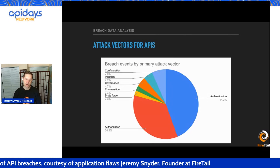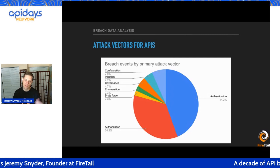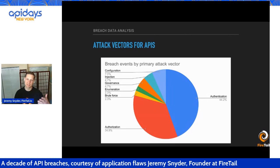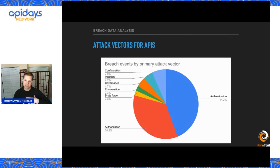On the authorization point, authorization and authentication are two separate things that often get equated by developers designing and launching APIs. Authentication refers to who I am — establishing my identity as a user of an API. Authorization is that second question of what should I be able to do? We're going to talk in a bit more detail about some of the things we've seen around authorization.